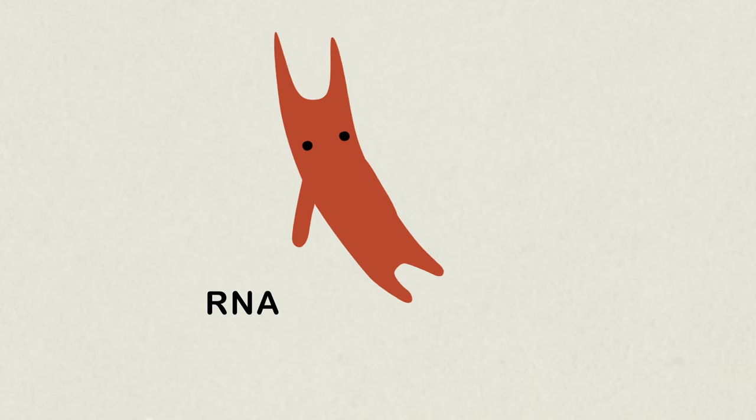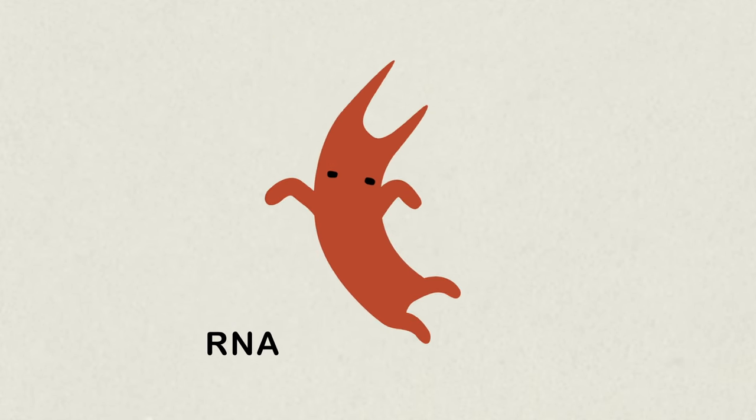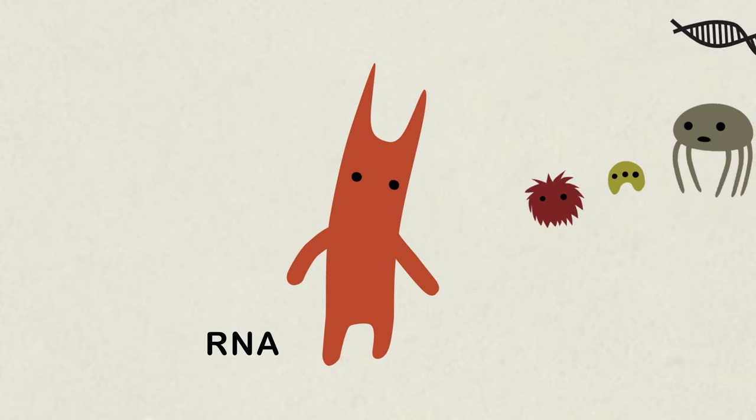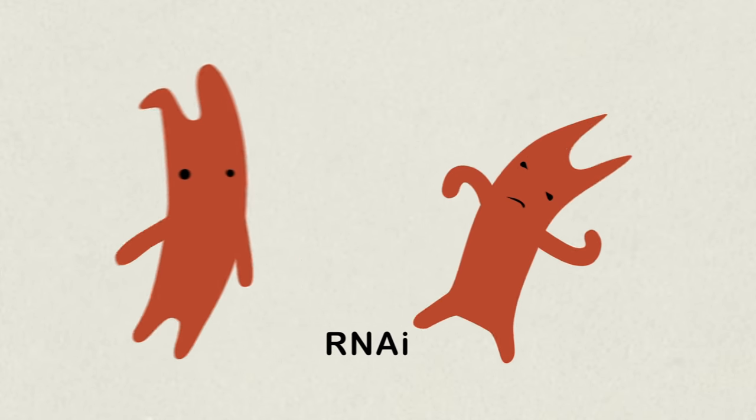But RNA does more for the cell than just act as a messenger between a cook and her cookbook. It can move in reverse and create DNA, it can direct amino acids to their targets, or it can take part in RNA interference, or RNAi.